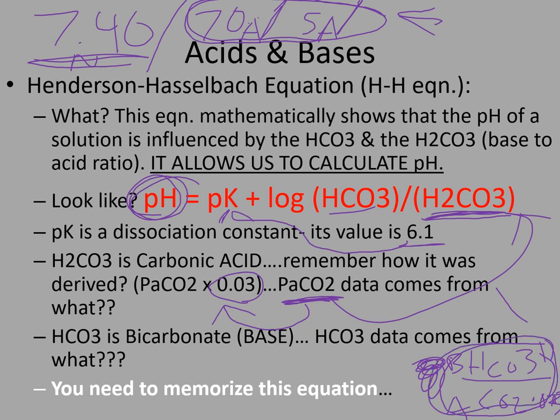Yes, I do want you to memorize this equation. You may not use it every day, but maybe you have it on a card in your badge holder. What I hope is that you remember: when you see a weird blood gas — normal pH but everything else looks abnormal — your tool to determine if it's a lab error is the Henderson-Hasselbalch equation. We'll practice the calculation together in one of the Zoom meetings.